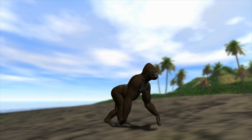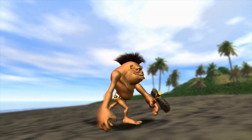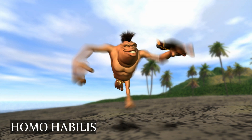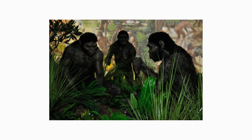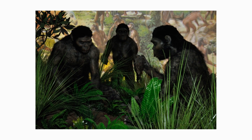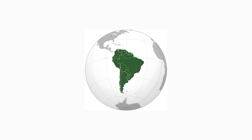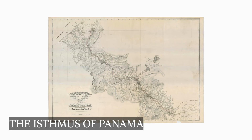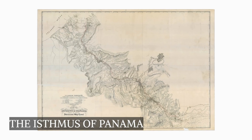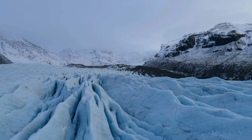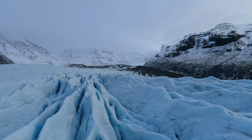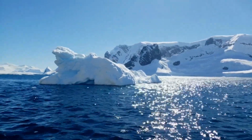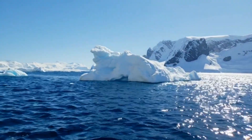Near the conclusion of the period, the first humans, also known as Homo habilis, appeared in Africa. Late in the Pliocene, certain continental migrations occurred, the most noteworthy of which was the union of North and South America at the Isthmus of Panama. During the Neogene, the global temperature cooled significantly, culminating in a succession of continental glaciations in the Quaternary period that followed.